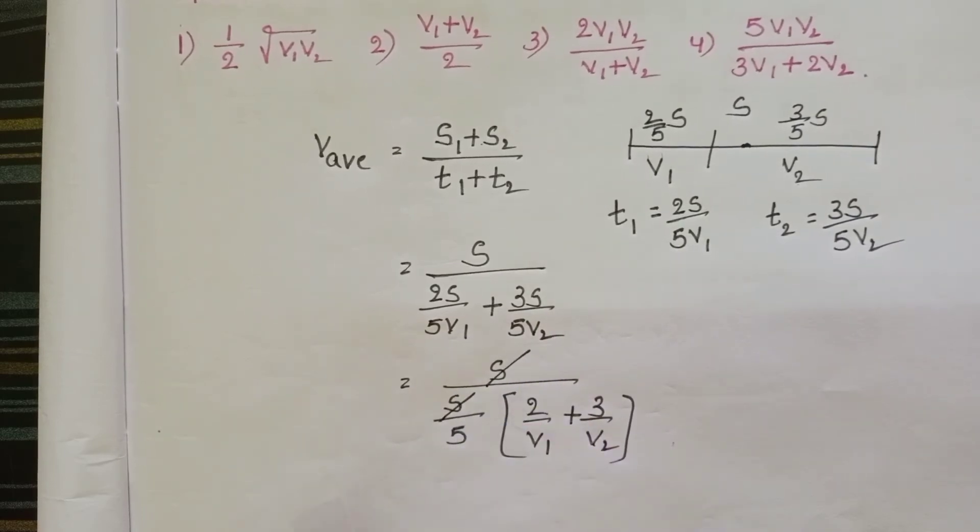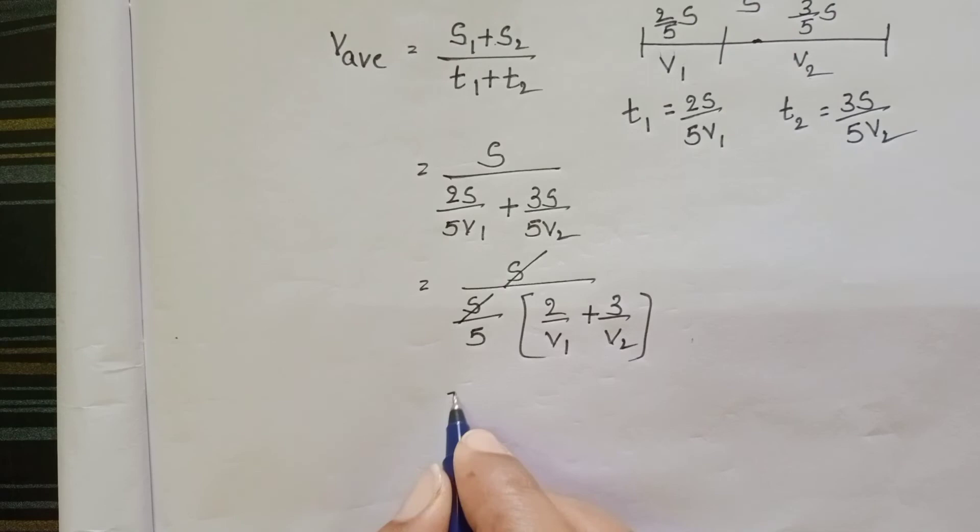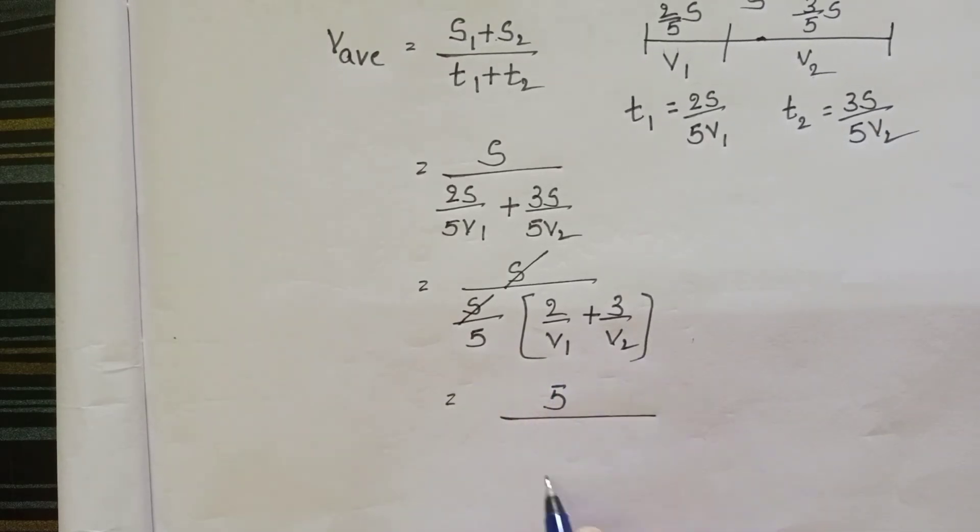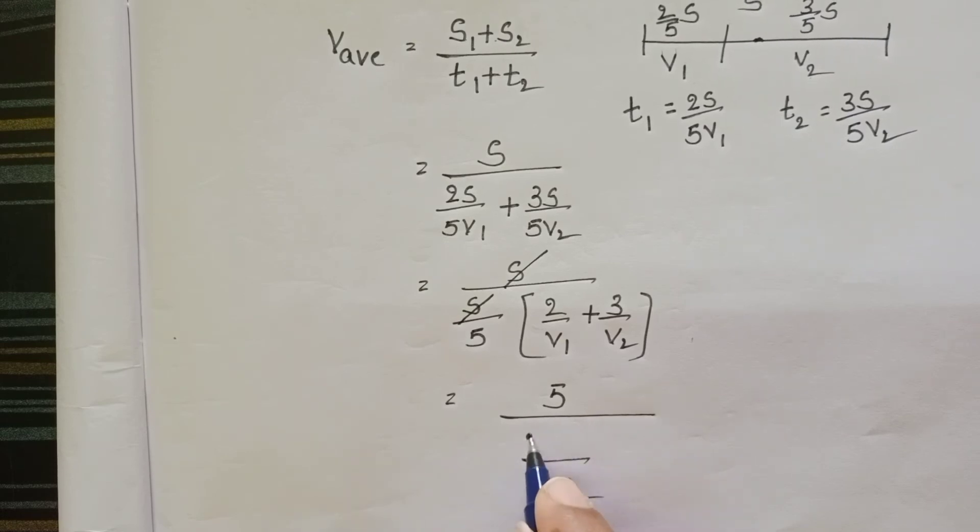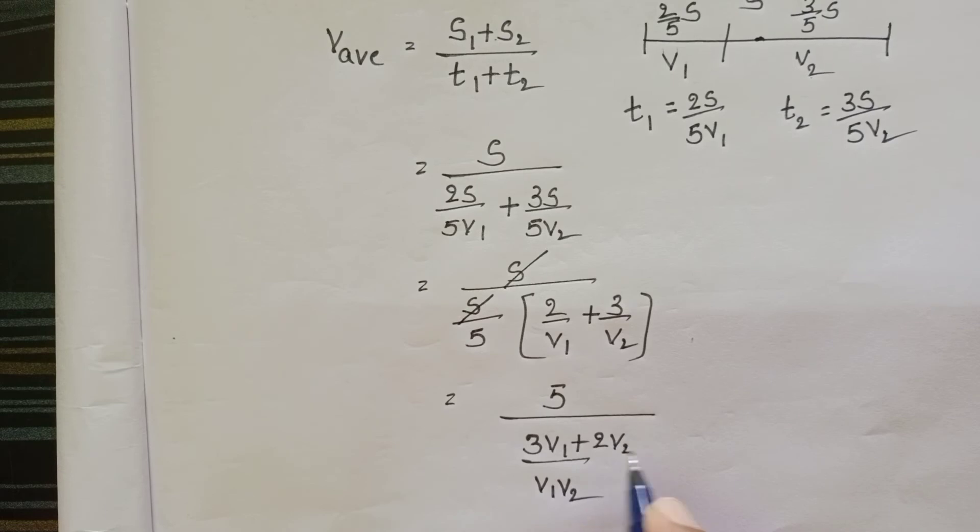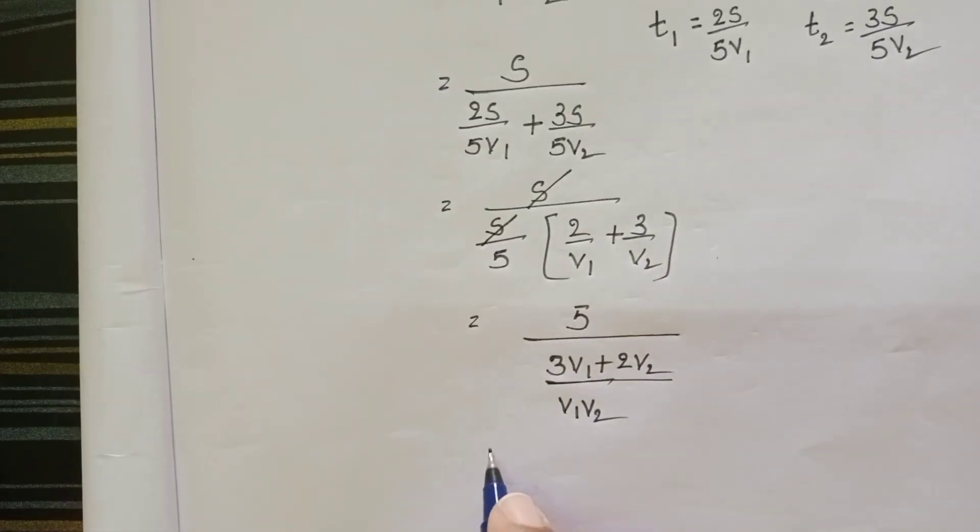Here S gets cancelled. 5 by LCM V1V2, 3V1 plus 2V2. So from this, 5V1V2 by 3V1 plus 2V2.